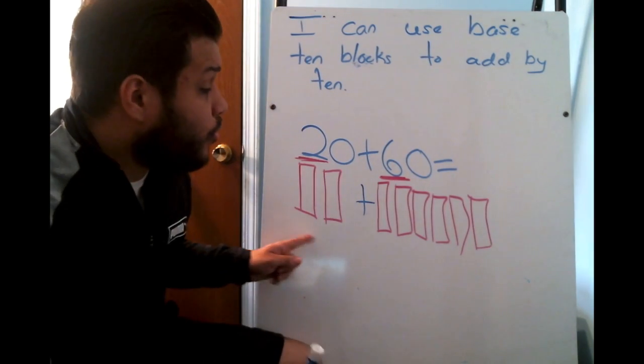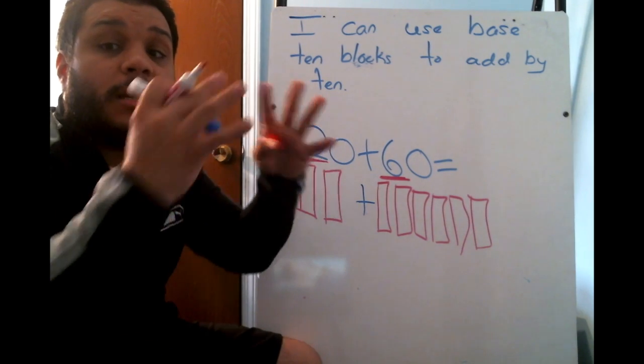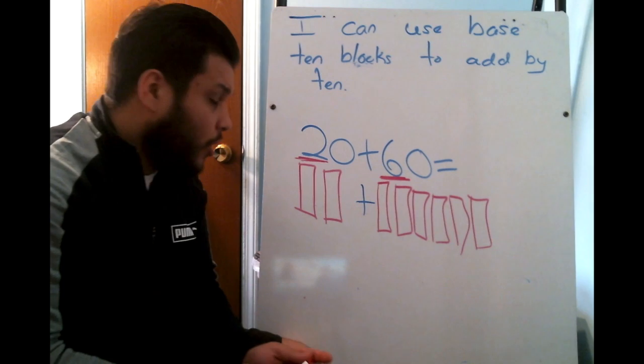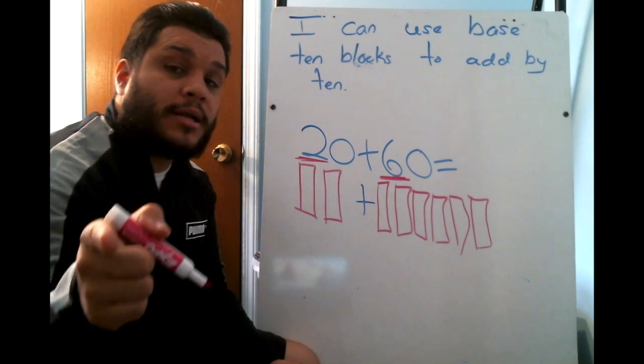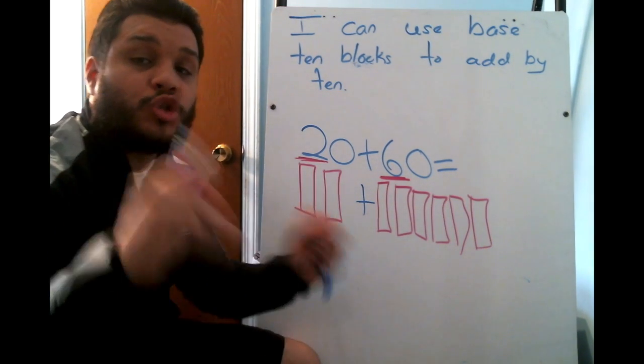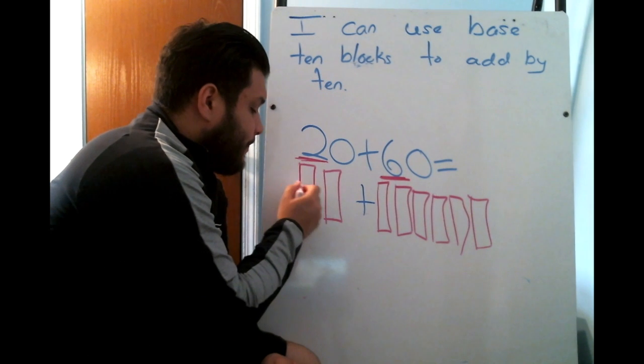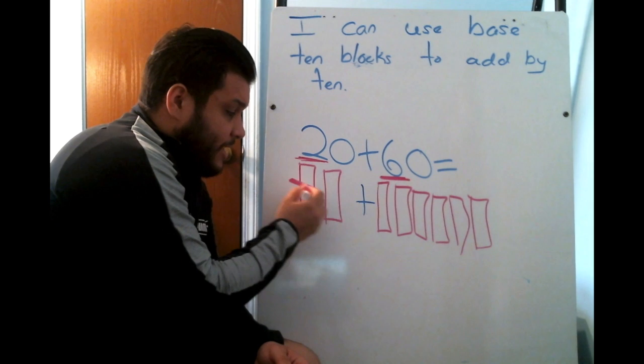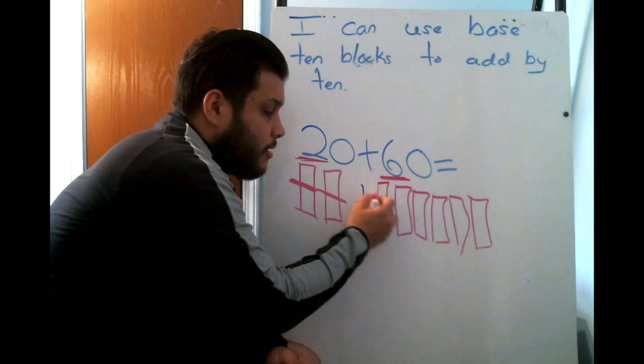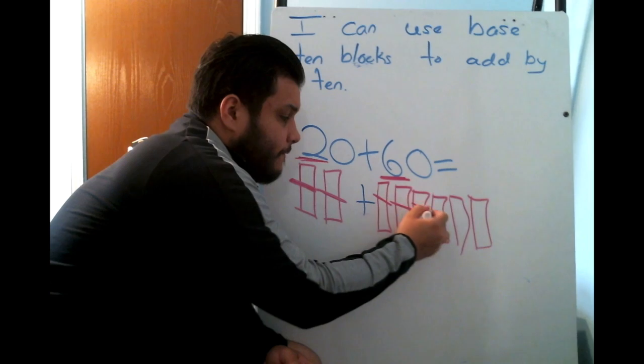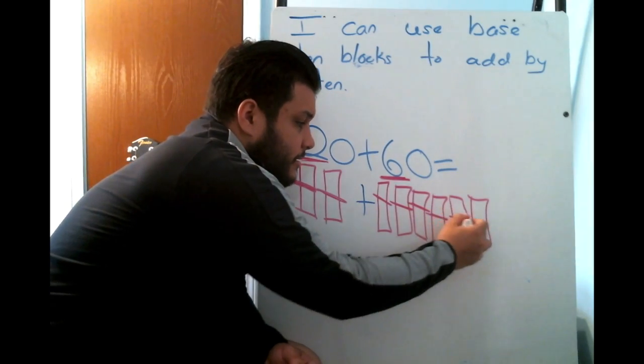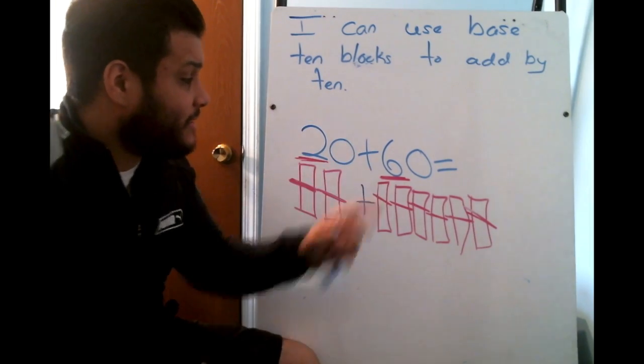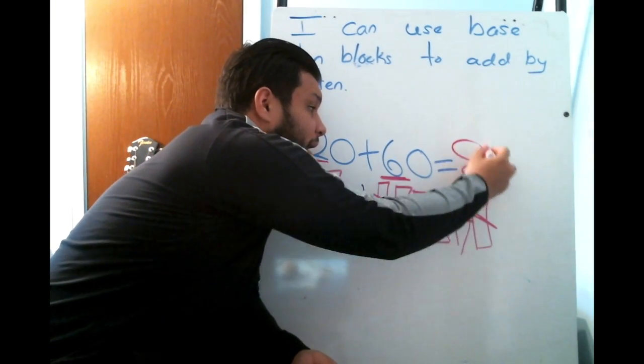Now, I want to, what's that word I used? Yes, combine them to see how much I have in all. Let's count. You're going to count this time and then at the end we'll scream the answer together. I don't hear you. Let's try again. Ready? 10. Keep going. 80. 20 plus 60 equals 80.